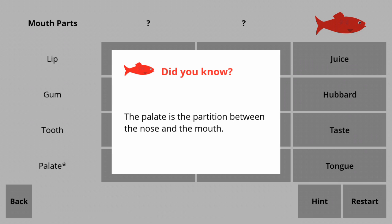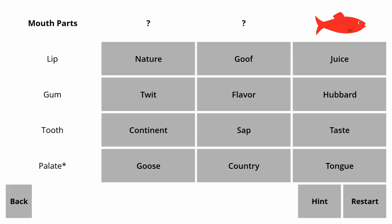Did you know the palate is the partition between the nose and the mouth? Yes, I did know that. And there was a substitute in my English class who was talking about words having two meanings. She used a sentence — I think it's from To Kill a Mockingbird — that the gum cleaved to her palate and rendered her speechless. There are three words in that sentence that have two meanings, one of them being cleave: to cling to, or to separate from.